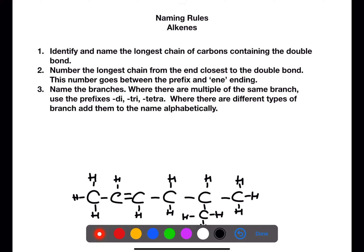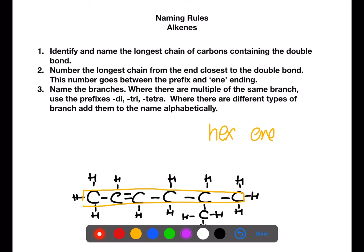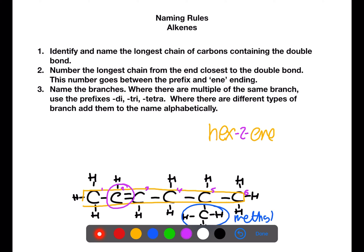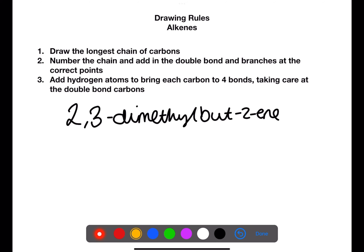The rules for naming branched chain alkenes are similar, however we have an extra rule because of the double bond. We first need to identify the longest chain of carbons which contains the double bond — in this case we have six, which would be hex-ene. We then want to number the chain from the end closest to the double bond and insert the number from the start of the double bond into the name. In this case the double bond is between two and three so we insert the number two. We then need to identify the branches — here we have a one carbon branch which is methyl. We add this onto the start of the name with the appropriate number, in this case 5-methyl.